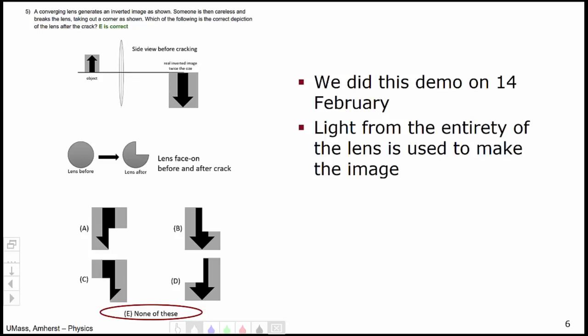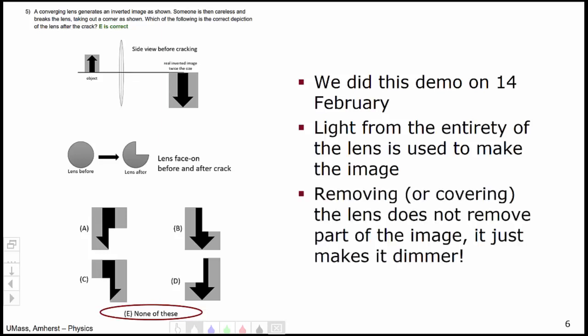So when I remove part of the lens, all that happens is less light goes into making the image. So the image gets dimmer, it is not impacted in its shape.